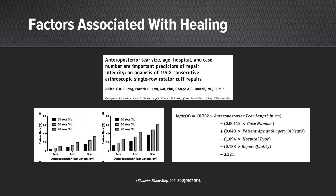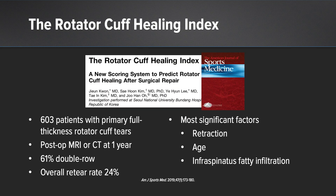There are a couple of attempts at this. A study by George Morrell out of Australia looked at over 1,900 patients and examined several factors. The most important factor found was anterior-posterior tear length, and they developed an equation incorporating other factors such as case number, patient age, hospital type, and repair quality to predict healing — though I find a more clinically useful equation in another study.